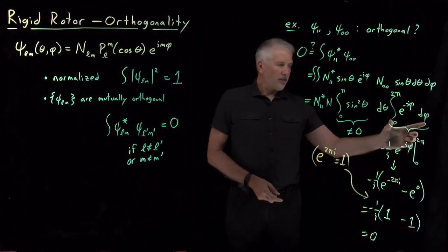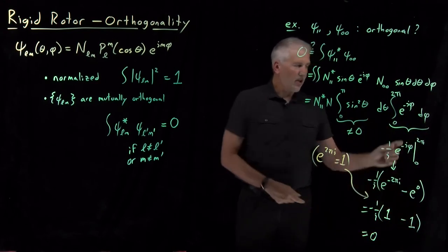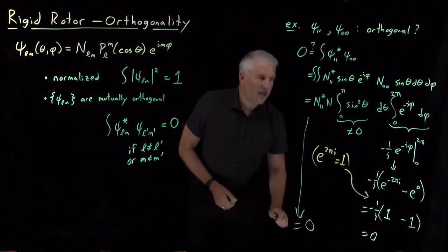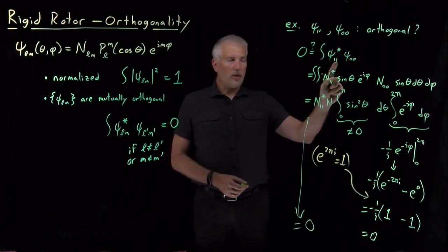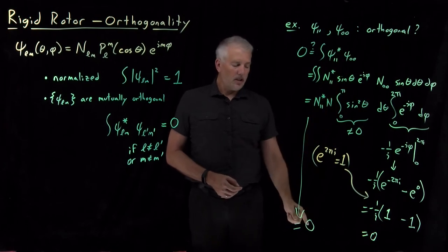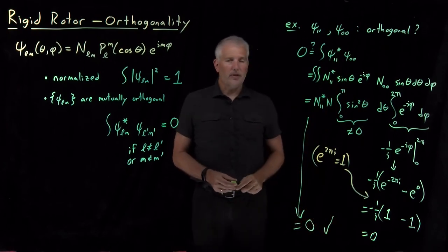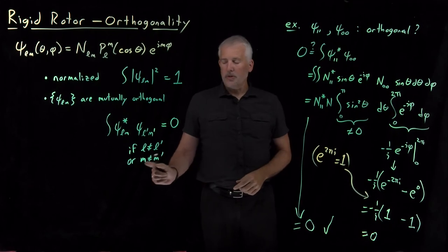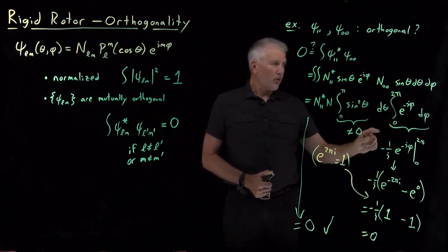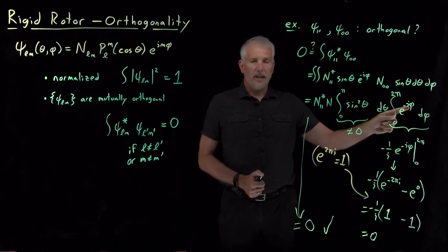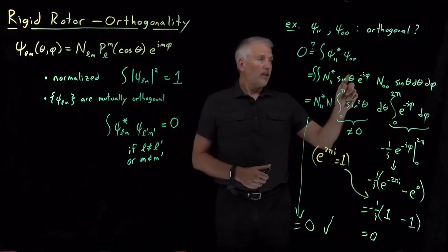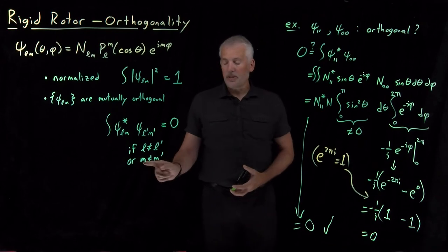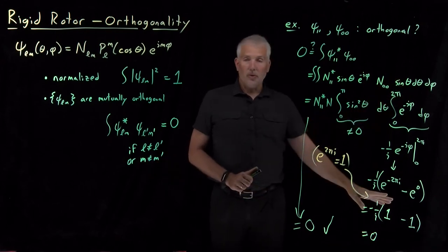The phi portion of the integral gives us 0. So after all of this work, the full overlap integral between the ψ₁,₁ and ψ₀,₀ wave functions turns out to be 0, confirming those two wave functions are orthogonal. In fact, any time M is not equal to M prime, the phi integral will work out to be 0 for the same reason — any net e^(iφ) factor left in the phi integral will integrate to 0 over 0 to 2π.